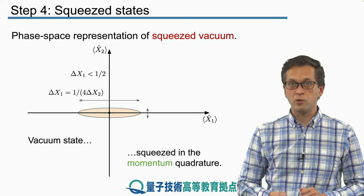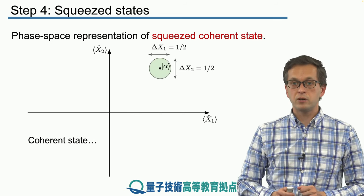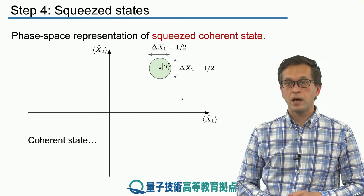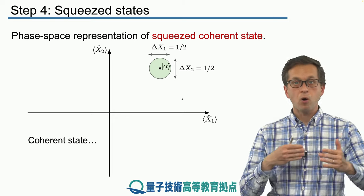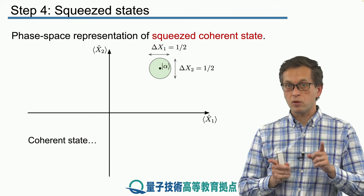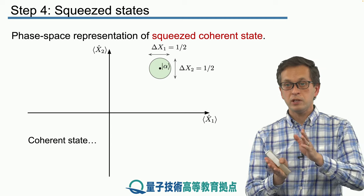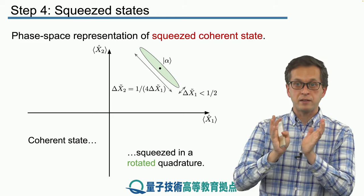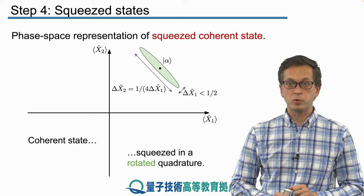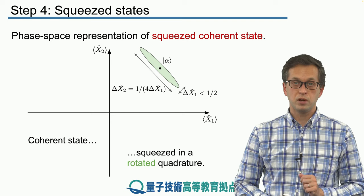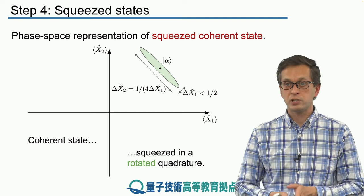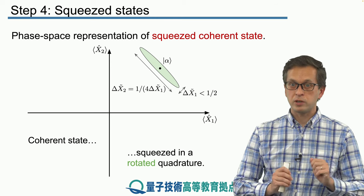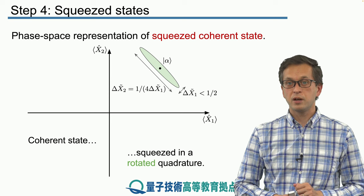So far we have been squeezing vacuum, but we can also squeeze any general coherent state alpha. We can squeeze in the position quadrature or in the momentum quadrature. But that's not all — we can rotate the axis of squeezing. We don't need to squeeze along x1 and x2; we can squeeze along an arbitrary angle, rotating the axis and squeezing along new quadratures tilde x1 and tilde x2. It is a squeezed state only if the fluctuations in the squeezed quadrature are less than 1/2, while the other quadrature expands to satisfy the Heisenberg uncertainty principle.